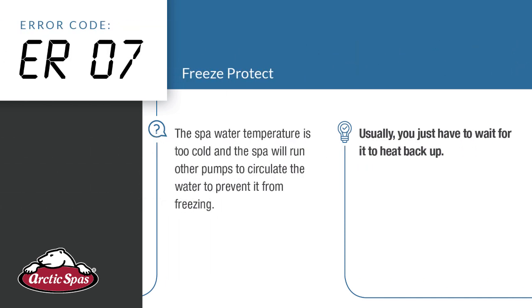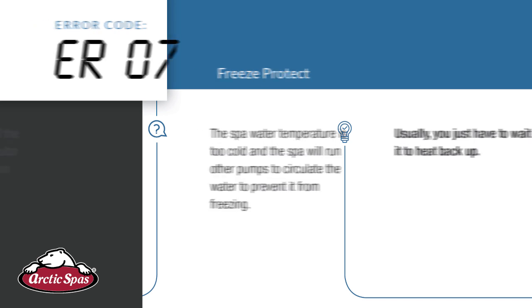ER07 — freeze protect. The spa water temperature is too cold and the spa will run other pumps to circulate the water to prevent it from freezing. Usually you'll just have to wait for the spa to heat back up.